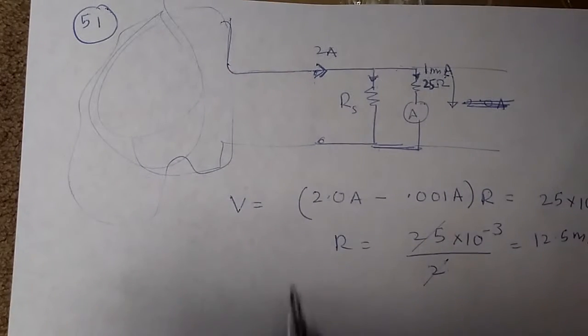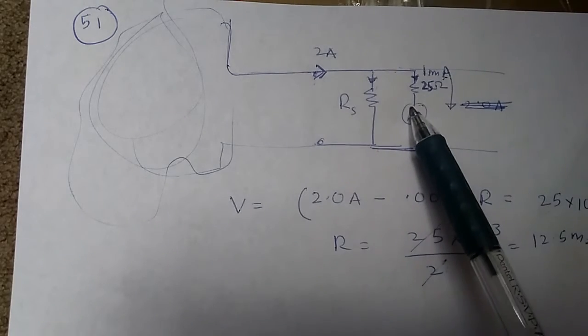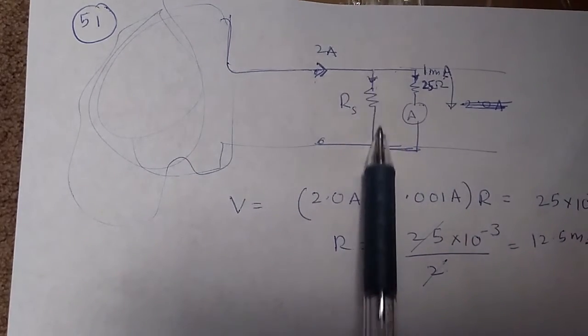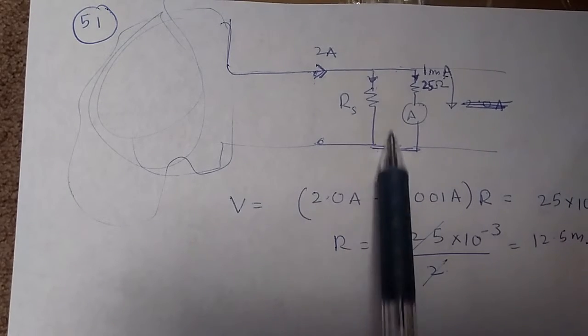So this is the whole thing. Anytime you think of an ammeter, remember that you need to put a shunt resistor in parallel with it, and it should be as small as possible.